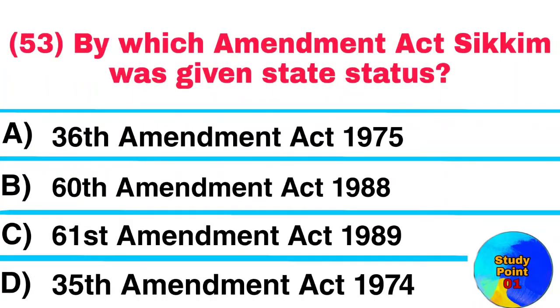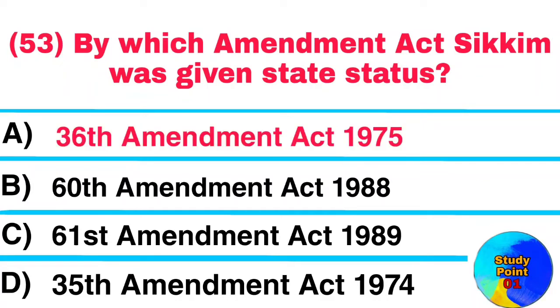Question No. 53. By which Amendment Act was Sikkim given state status? Answer: 36th Amendment Act, 1975.